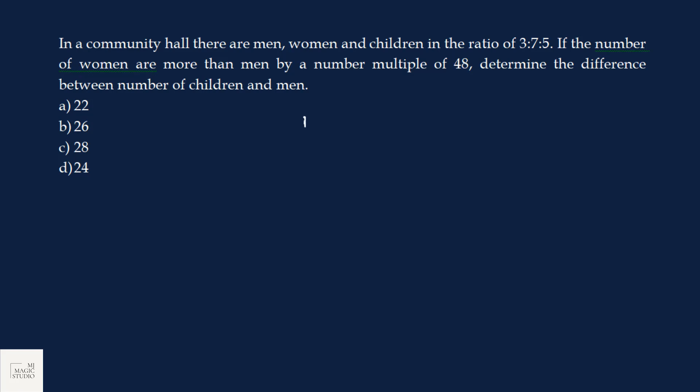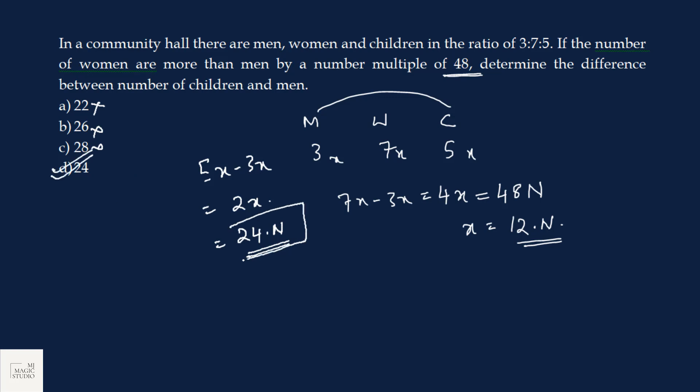In a community hall, there are men, women, and children in the ratio 3:7:5. If the number of women are more than men by a number multiple of 48, then 7x - 3x = 4x = 48n, so x = 12n. The difference between number of children and men is 5x - 3x = 2x = 24n. When n = 1, the answer is 24. Option D is the pick.